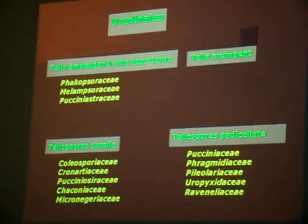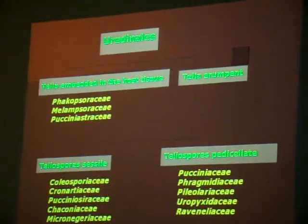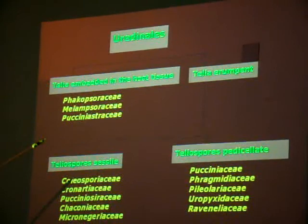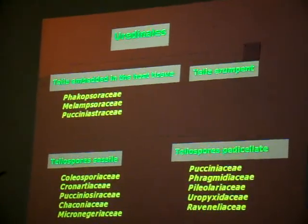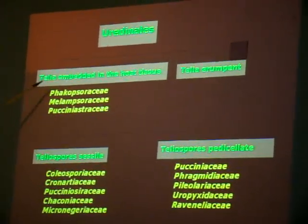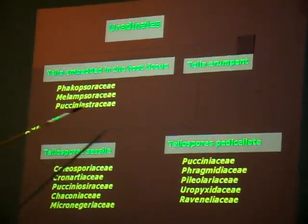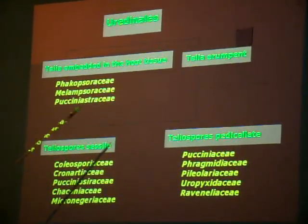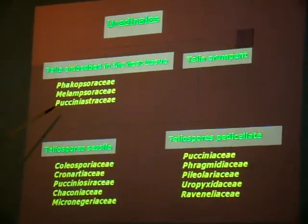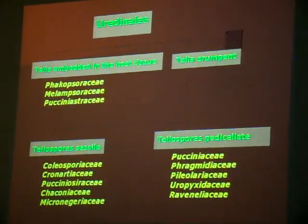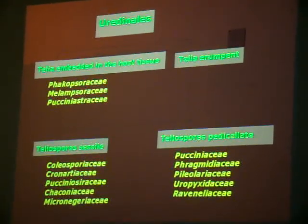The classification proposed by Kamins and Hirotsuka divides the order Uredinales into several families. The basic character is whether the telia are embedded in the host tissue or exposed outside it. If they are embedded in the host tissue, they are placed in three families: Phacapsoraceae, Melamsoraceae, and Pucciniastriaceae.